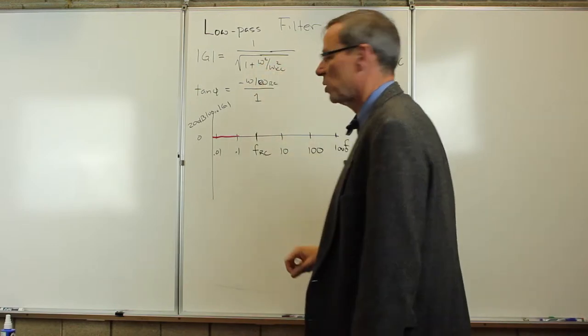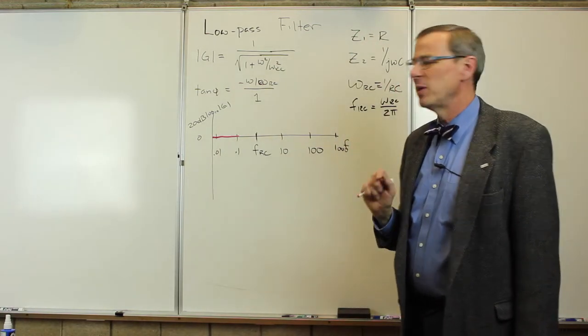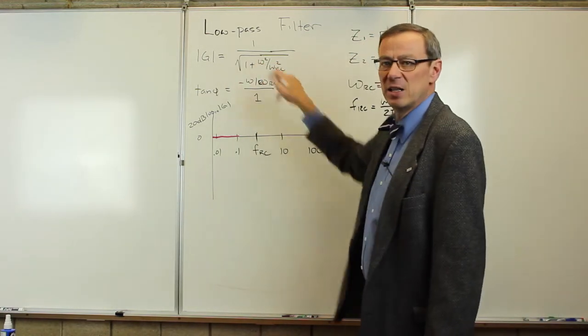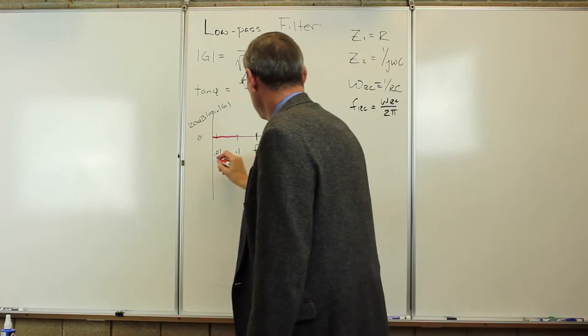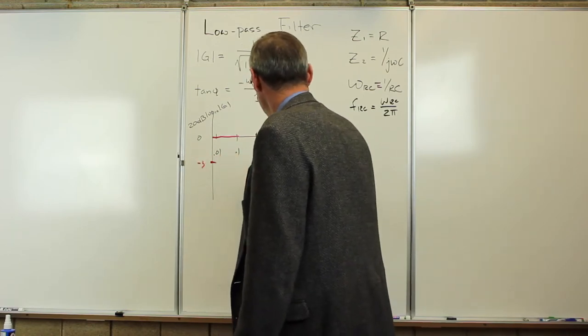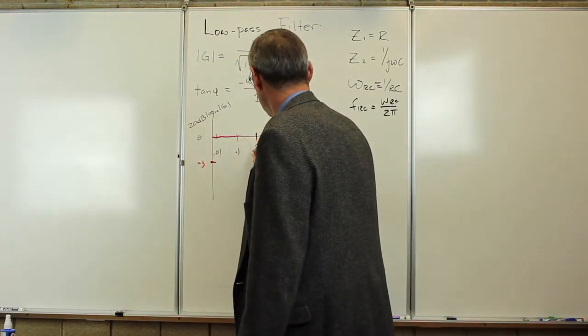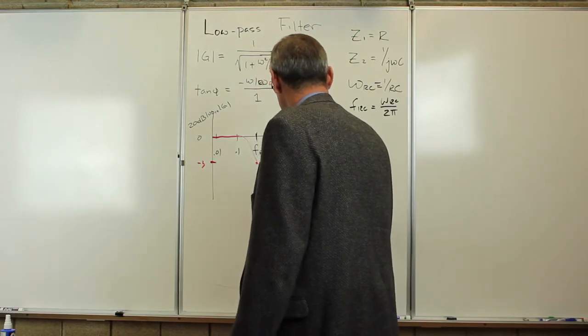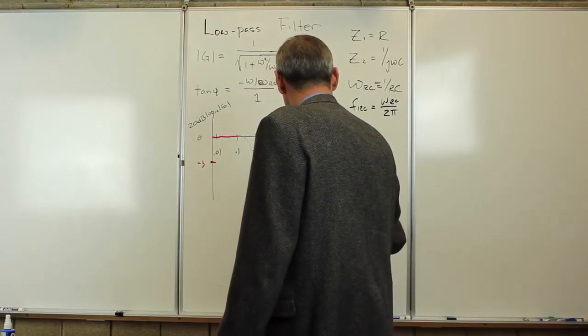That's going to be 1, we're going to get 1 over the square root of 2. That's the minus 3 dB point. The gain is 1 over the square root of 2. So this is going to be at minus 3 when we're here. So it's going to roll over and drop off at 20 dB per decade.